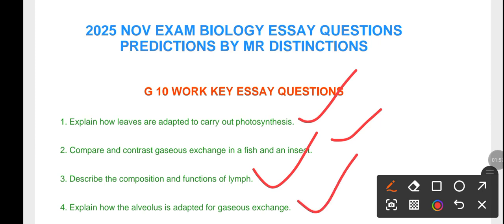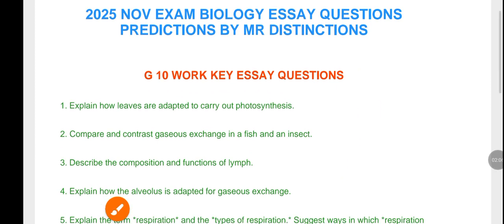The fourth one, you need to be able to explain how the alveolus is adapted for gaseous exchange. These are the first four essay questions. Let me show you the other essay questions.